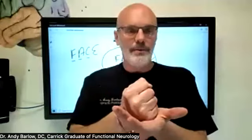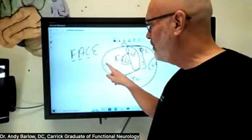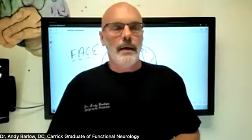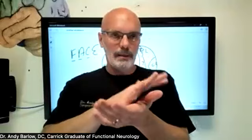Apraxia is when you tell somebody to do rock-paper-scissors and they just can't do it — they can't even initiate the movement. This occurs when the prefrontal cortex is damaged. Then we have dyspraxia, where the patient is attempting the movement but is all over the place or really, really slow.